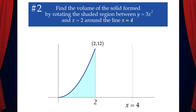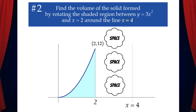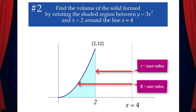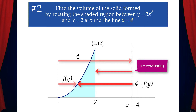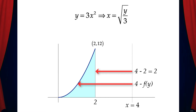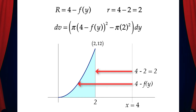Example 2: Find the volume of the solid formed by rotating the shaded region between y equals 3x squared and x equals 2 around the line x equals 4. In this case, note that there's space between the region and the axis of revolution. That means we'll use the washer method. We need to find the outer radius and the inner radius. Since the distance from the y-axis to the axis of revolution is 4 and the distance from the y-axis to the curve is f of y, the outer radius is 4 minus f of y. And that means the inner radius is 4 minus 2.